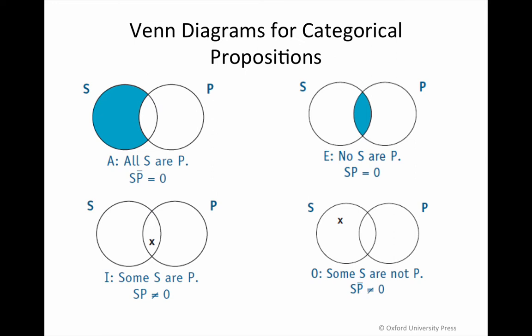When you look at the O proposition, there is a member of the S class. Cast your eyes diagonally to the universal affirmative. If it's true that there is a member of the S class that's outside of the P class, then the universal affirmative can't be true. Remember, the universal affirmative says that there can't be anything in the area of S outside of P. So if the O proposition is true and there is a member of the S class outside of the P class, then the A proposition in the upper left corner must be false. If it's the case that the A proposition is true, then the O proposition has to be false. These are known as contradictories.